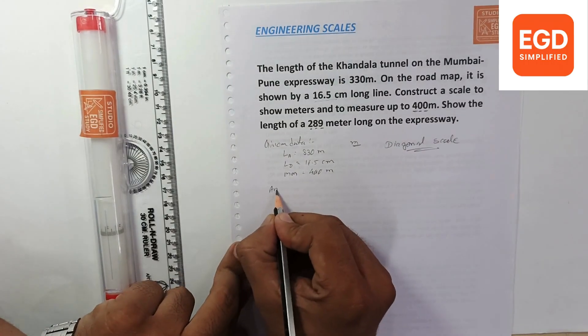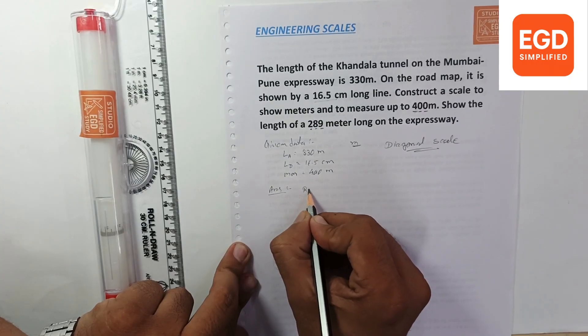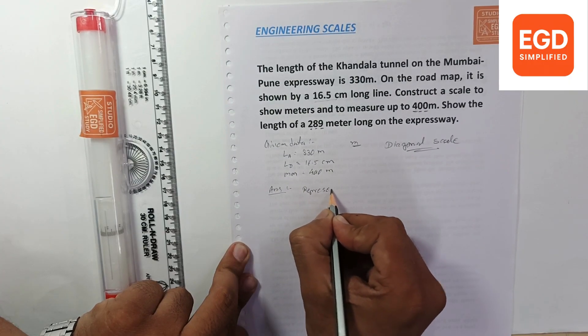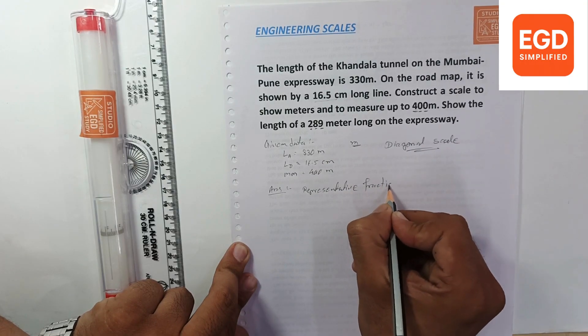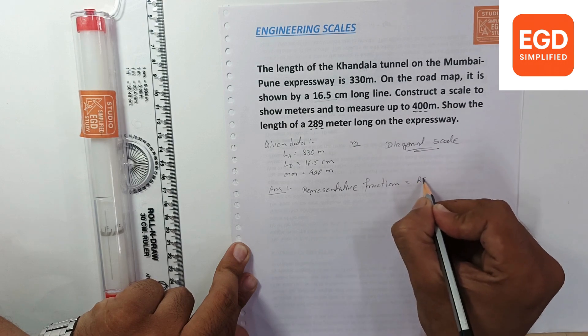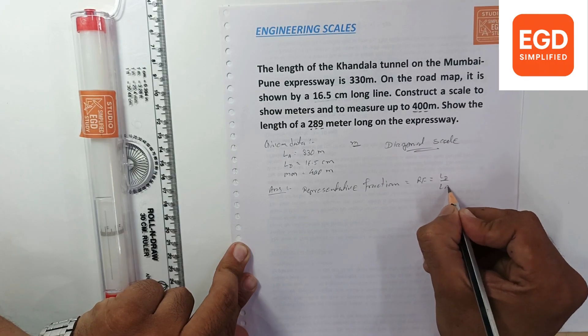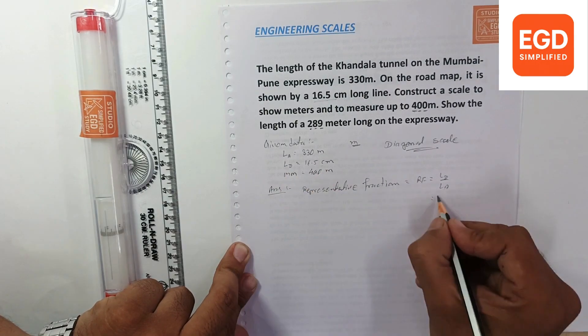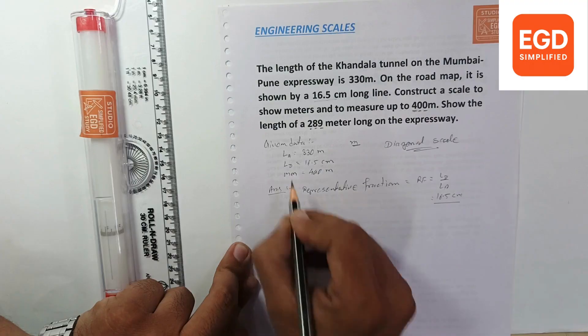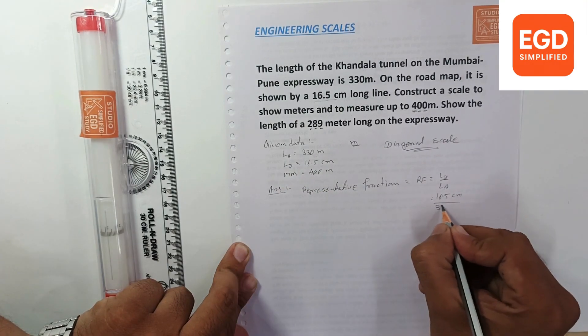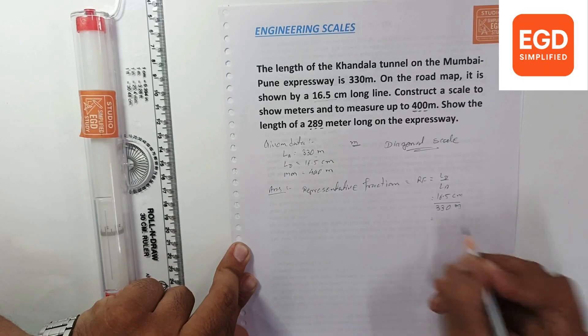Now we have the data. We can calculate first of all the representative fraction, RF. What is RF? RF equals drawing length upon actual length. What is drawing length? 16.5 centimeters. And what is the actual length? 330 meters.